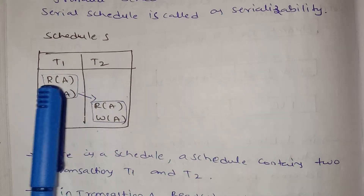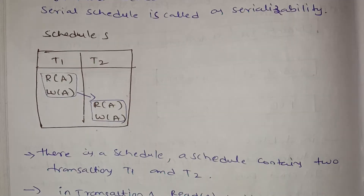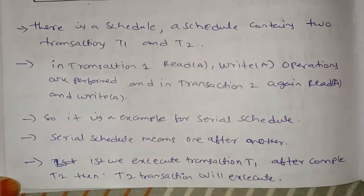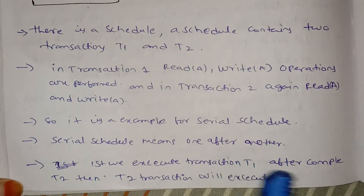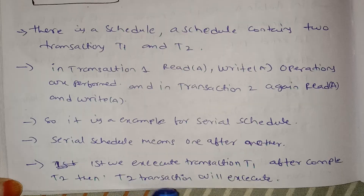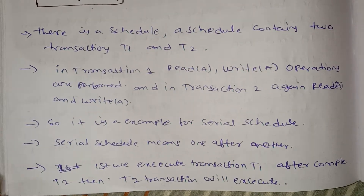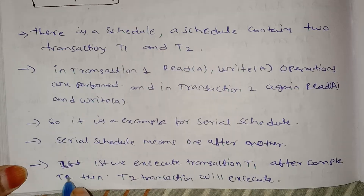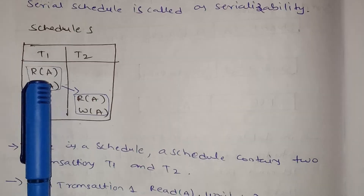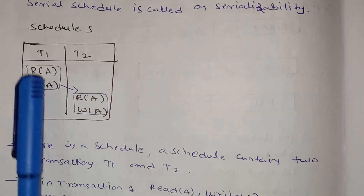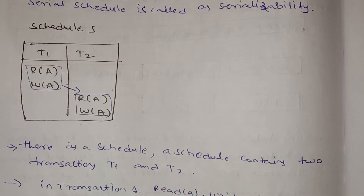This is an example of a Serial Schedule. In a Serial Schedule, first we execute transaction T1, and after T1 is completely done, then T2 is executed. So T1 completes fully before T2 begins.